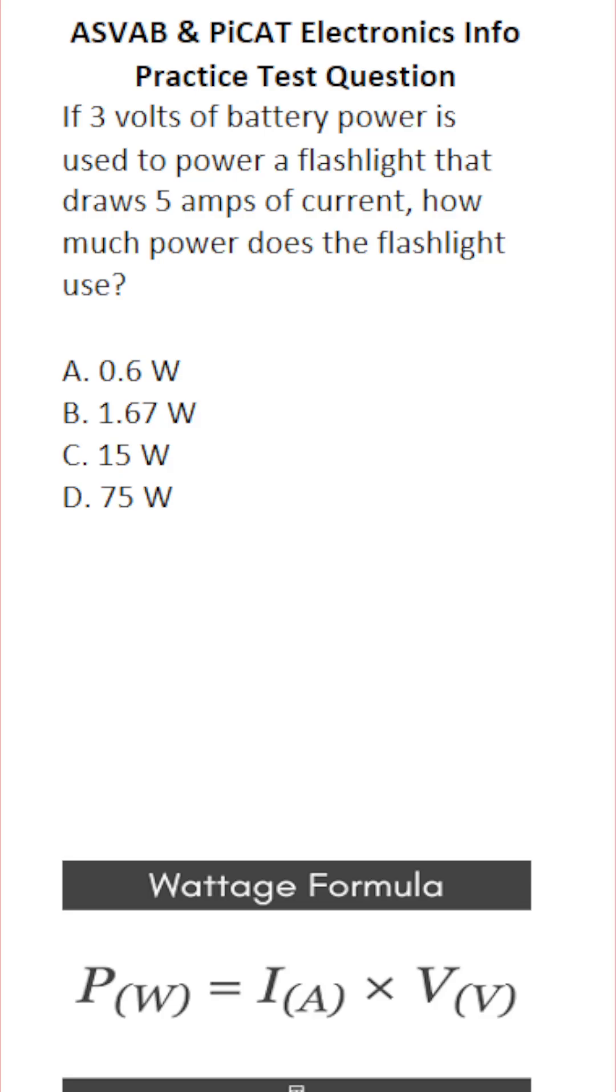This electronics information practice test question for the ASVAB and PiCAT says, if three volts of battery power is used to power a flashlight that draws five amps of current, how much power does the flashlight use?